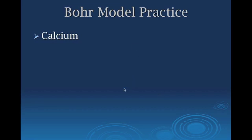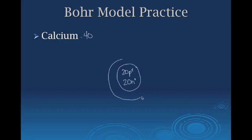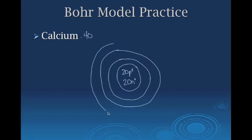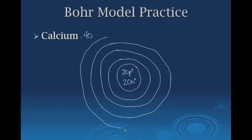Our next practice is calcium. Pause the video, try to draw it yourself, then play and check your work. First, draw the nucleus — calcium has 20 protons. The most common form is calcium-40, so it has 20 protons and 20 neutrons. Calcium is in row four, so we draw four energy levels. A good thing about Bohr models is they help you envision how atomic radius increases going down a group, because more energy levels make the model bigger.